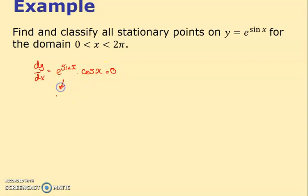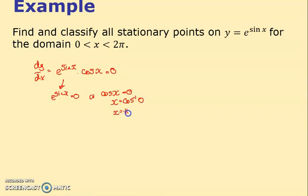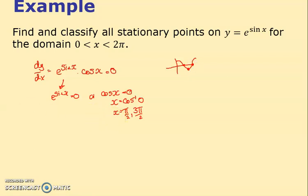Set dy/dx = 0 for stationary points: either e^(sin x) = 0 or cos x = 0. Cos x = 0 gives x = π/2 and x = 3π/2 in the range 0 to 2π — you can see these on the cos graph where it crosses zero.